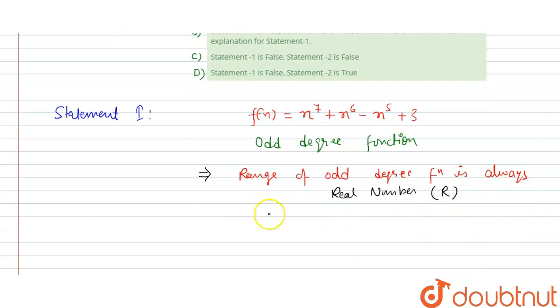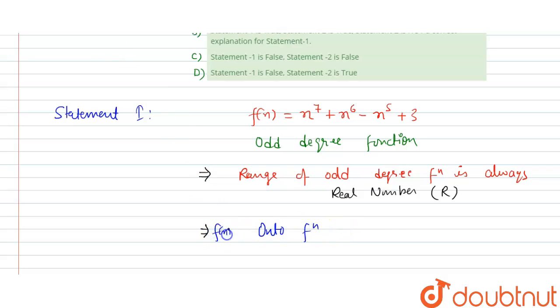Since the domain is ℝ and the range is also ℝ, which equals the codomain, we can say that f(x) is an onto function. Therefore Statement 1 is true.